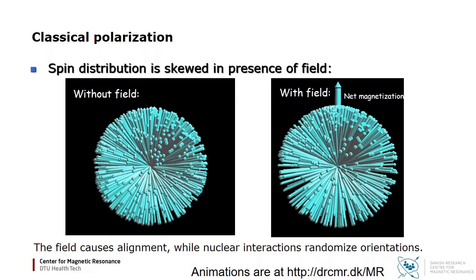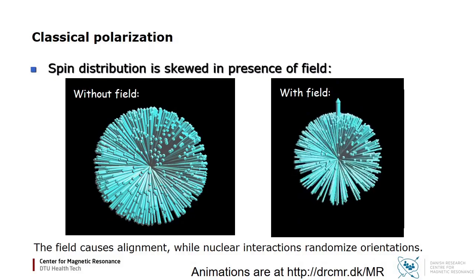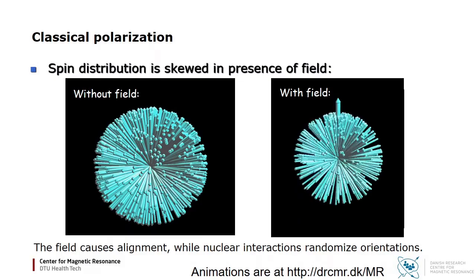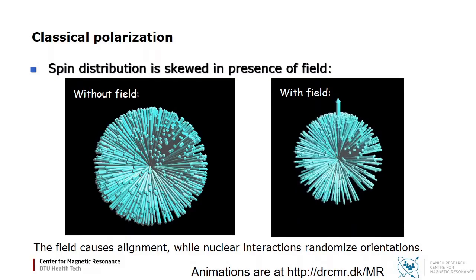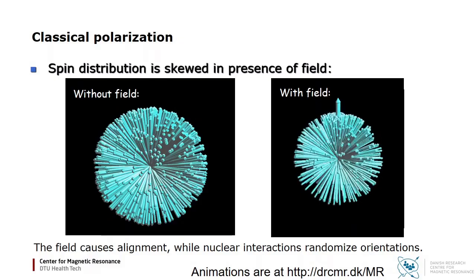On a timescale T1, a net magnetization appears. Now the spin distribution is slightly skewed, described by the Boltzmann distribution. A second effect of the applied field is that all the nuclei start precessing at the Larmor frequency. Since the magnetization is longitudinal, there is no energy radiated, however, so only thermal fluctuations would be detected.